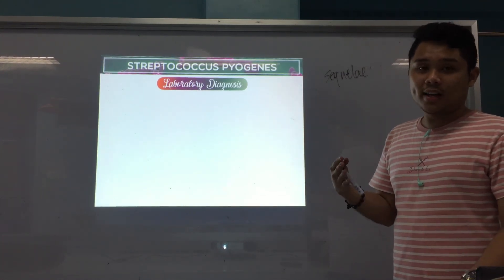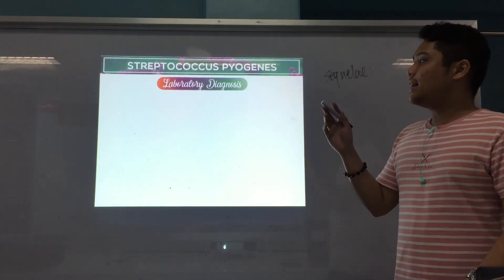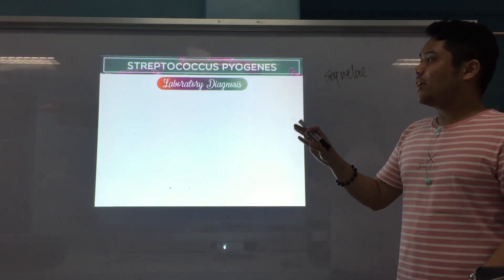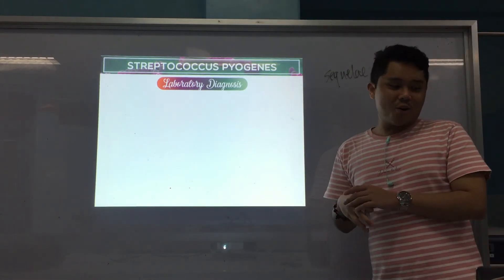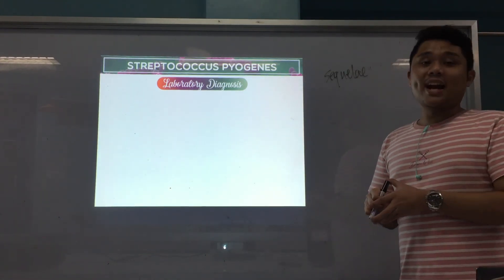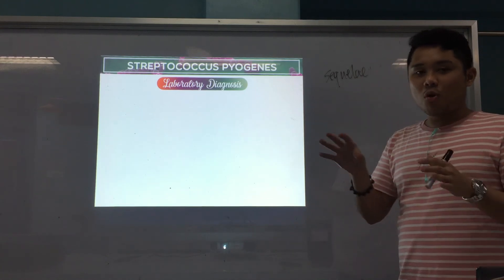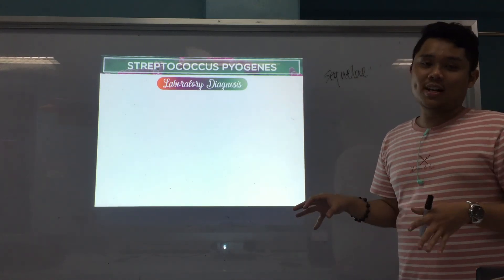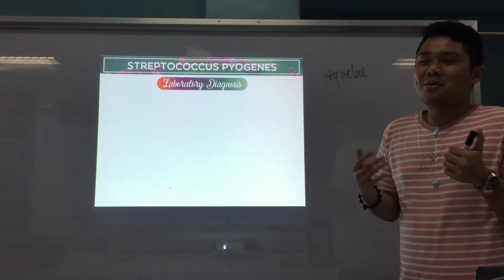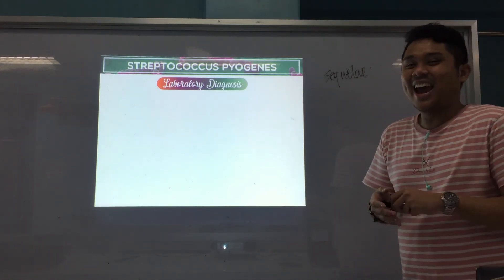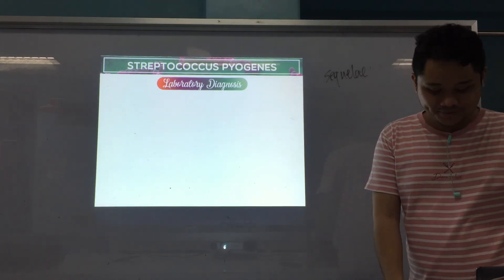These two conditions — rheumatic fever and acute glomerulonephritis — are the important sequelae to watch for after a streptococcal infection. In the next part of the video, we will discuss the laboratory diagnosis of streptococcal infections, focusing on serological methods.